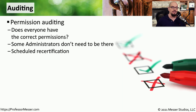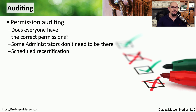Some of the things to look at during an audit are the permissions being used on the system. Everyone should have permissions that are specific to the job that they're doing, and the permissions should not go beyond the scope of their particular role. I've worked in some environments where everyone on the network was assigned administrator access. In those cases, an audit would show that the permissions were definitely not set up properly and that changes would have to be made to everyone's login.